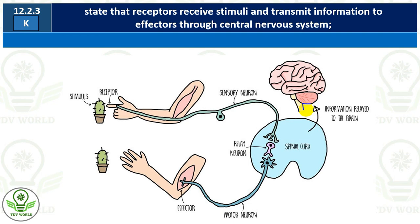After some time, the brain also receives the message and interprets it, and a few seconds later you begin to feel pain and understand what happened. The spinal cord's job was only to make you withdraw your hand. After that, giving you the feeling of pain is the brain's job. Receptors receive stimuli, transmit information through the central nervous system to the effectors.